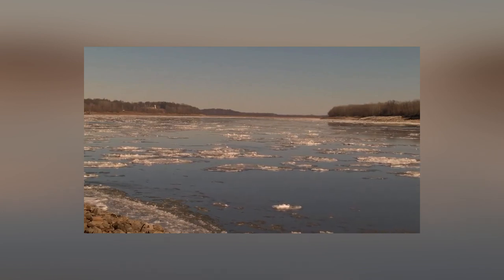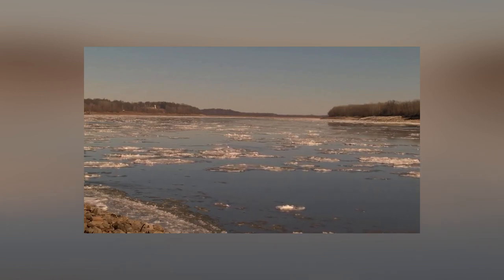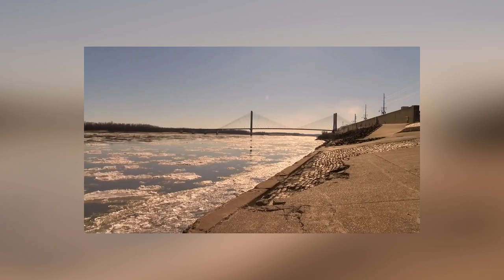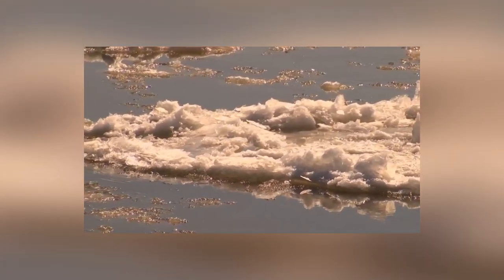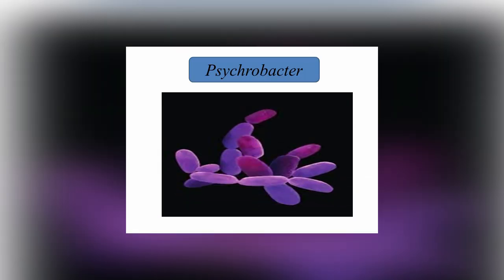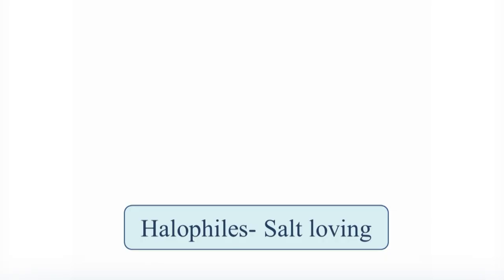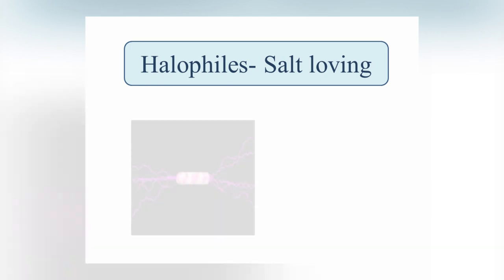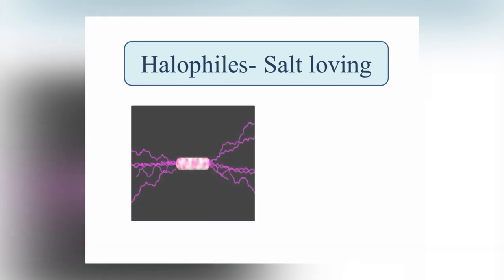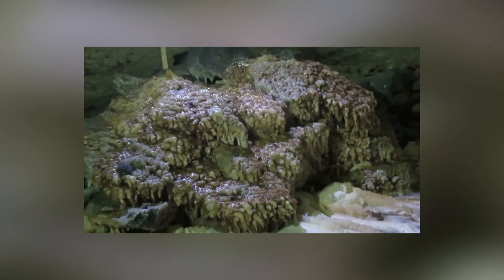Psychrophiles grow in cold temperatures ranging from minus 15 degrees Celsius to 15 degrees Celsius. Particularly bacteria grow in cold temperatures. For example, Psychrobacter. Halophiles are organisms that live in extremely salty environments such as the Great Salt Lake and the Dead Sea.